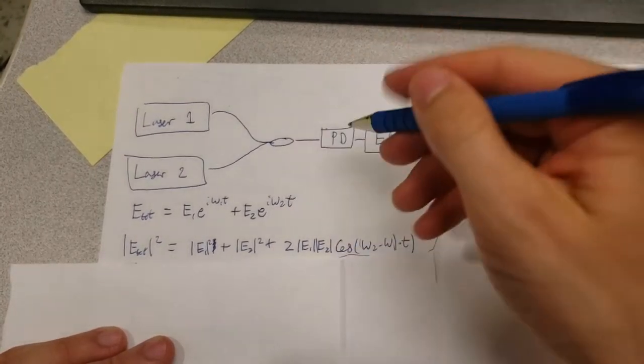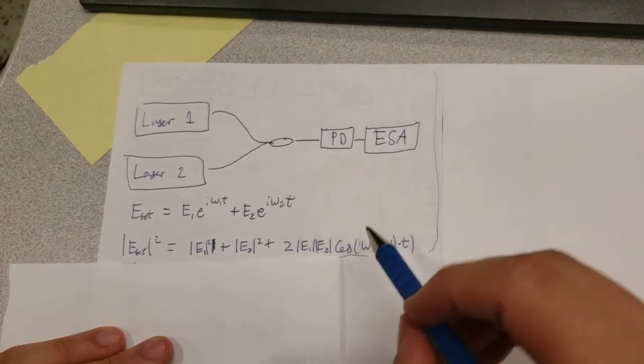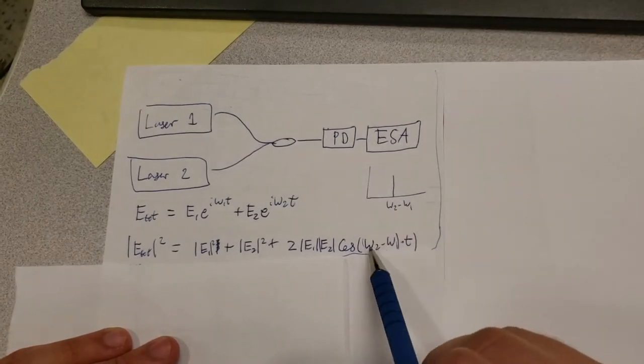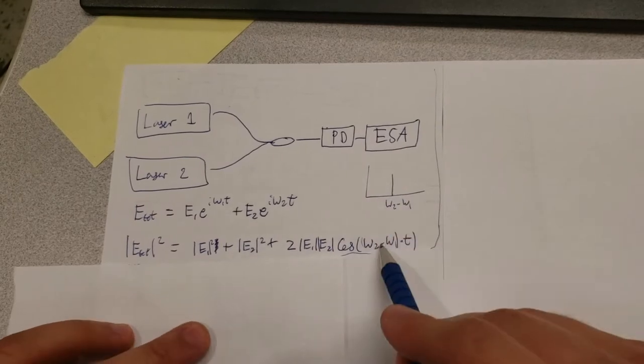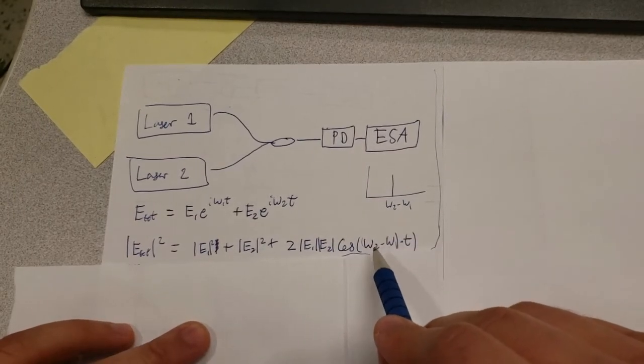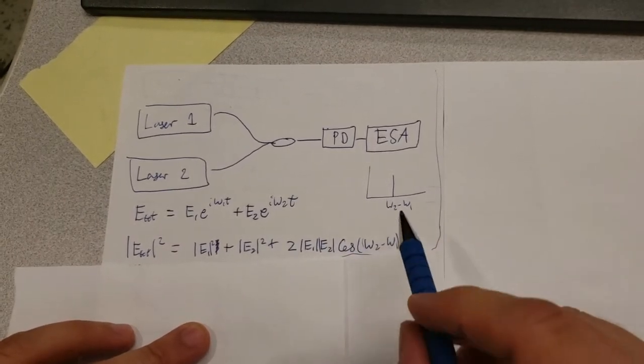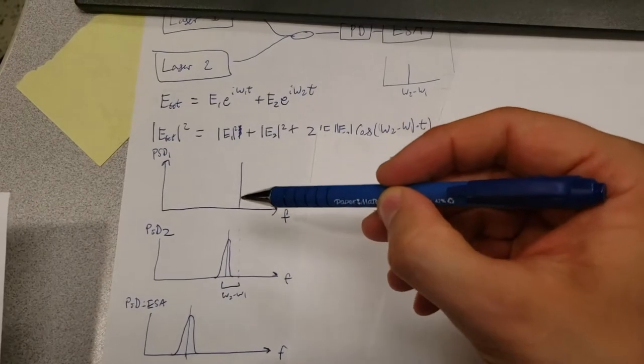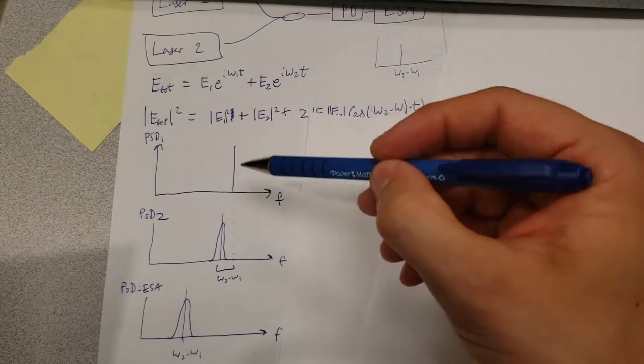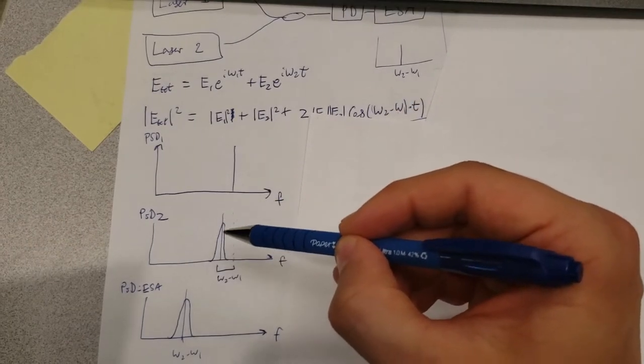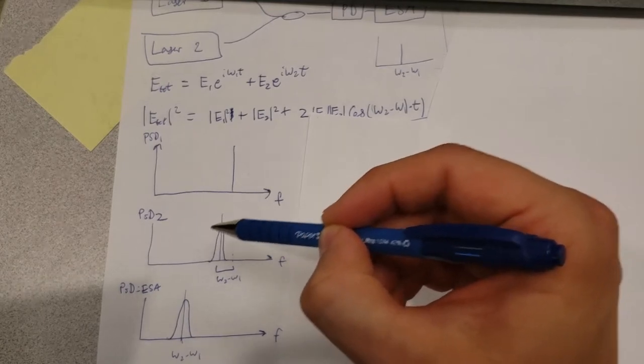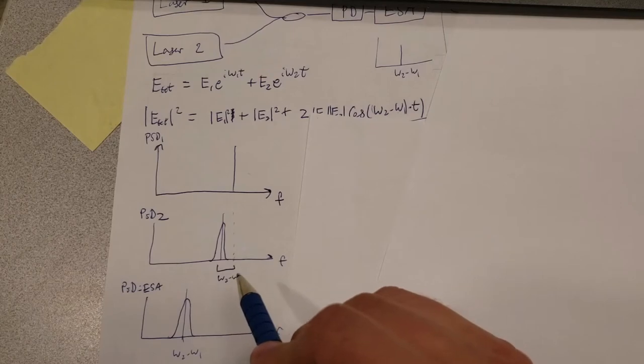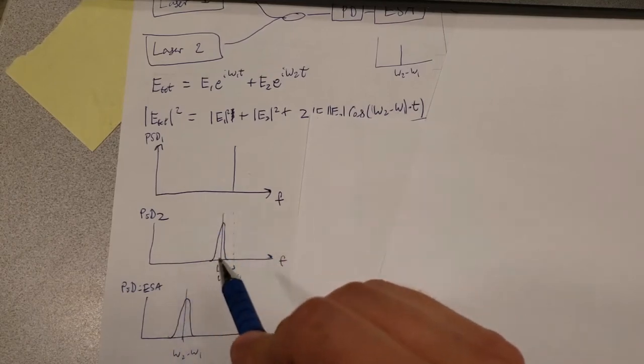You can imagine that if both lasers are completely perfect, they're just narrow straight lines. Then in the ESA spectrum we're just going to see a single straight line centered at omega 2 minus omega 1. But suppose omega 1 is perfectly fixed and omega 2 is slightly imperfect, meaning the frequency changes a little bit over time. In that case, the power spectral density in the optical domain for the first laser will be a straight line, but the second laser is slightly broader because its line shakes back and forth. The signal we measure on the ESA will be centered at the frequency difference between the two lasers, and the width is determined only by the second laser.